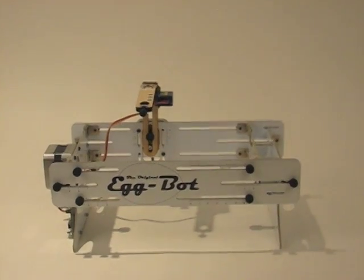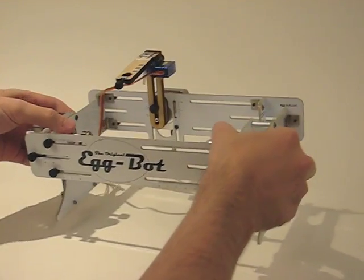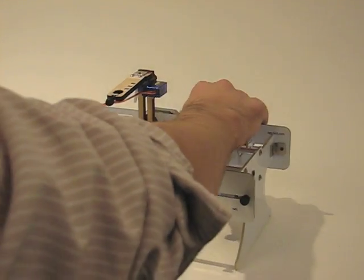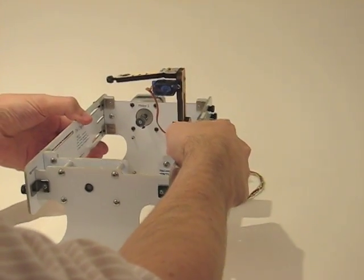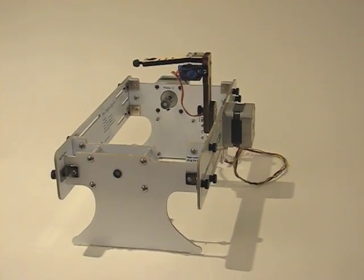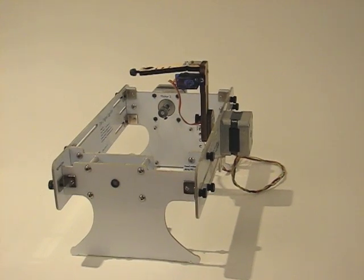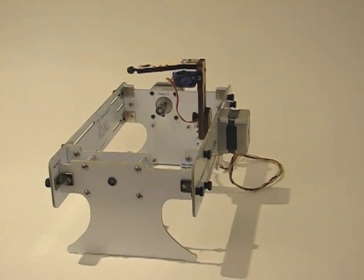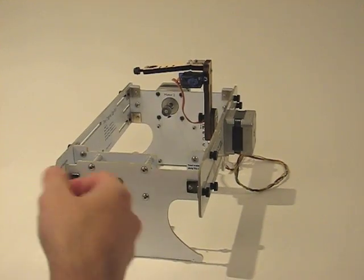Now there's two different parts of this. One is there's the one-time setup because you just built it and you want to make sure that it's set up to work correctly. And the other is the everyday kind of setup, how do you use it to print onto, for example, an egg or some other object.